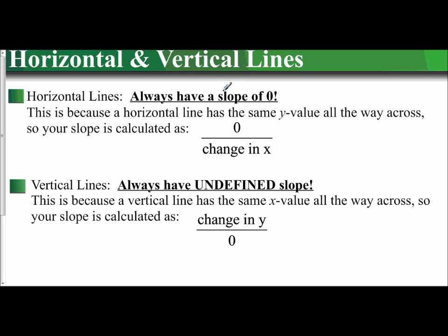Horizontal lines will always have a slope of 0. The reason behind this is because if you have a horizontal line, then the y value is always going to stay the same. It's going to remain 0. There is no y value change. And so it's going to be 0 in the numerator.